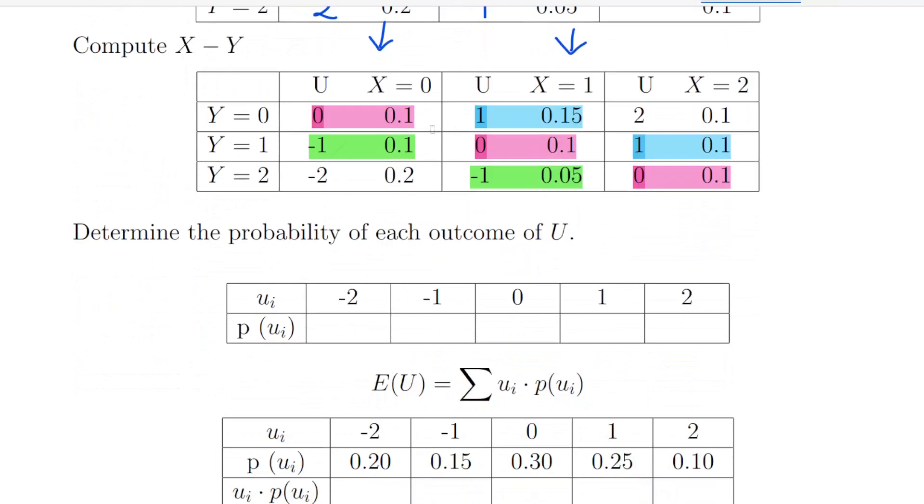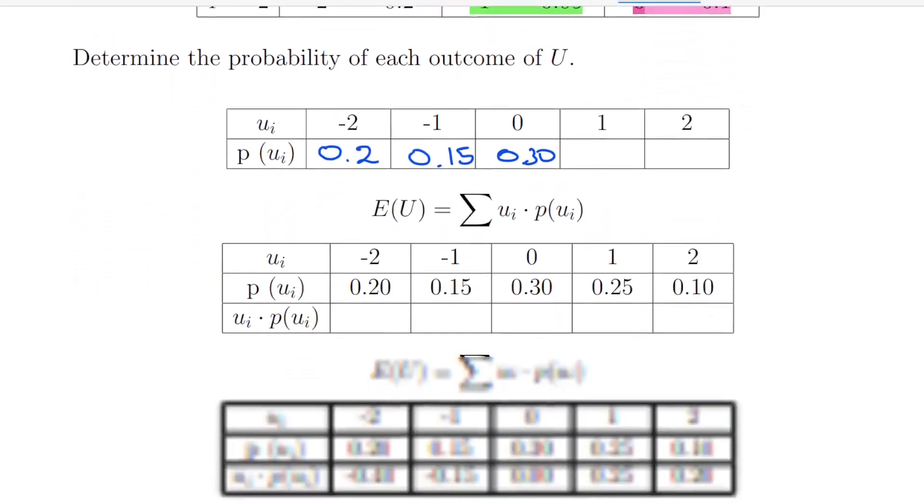So what we're going to do is try and calculate the combined probability of each. We go through the table and see what corresponds to minus 2. In this case, it's just one cell, 0.2. In the next case, U equal minus 1, that's 0.15, and then 0.3 and so on. So we have the table down here.